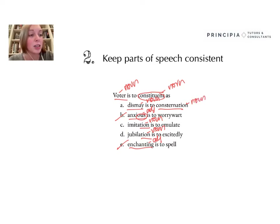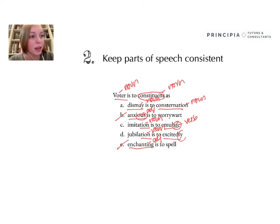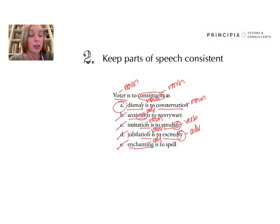C — imitation is to emulate. Emulate is actually a verb; it has an -ATE ending, which tells me it's a verb. And D — jubilation is to excitedly. That -LY ending tells me that it is an adverb. So I can actually eliminate C and D based on that. And I get my correct answer: A — dismay is to consternation. These two words are synonyms, just like voter and constituent are. Those are synonyms as well.